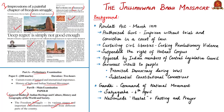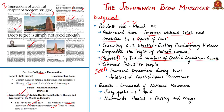Let us know about the background for this massacre. The government of India passed the Rowlatt Act in March 1919. The act authorized the British Indian government to imprison any person without trial and conviction in a court of law, and it aimed at severely curtailing the civil liberties of Indians in the name of curbing revolutionary violence. The act would also enable the government to suspend the right of habeas corpus, which had been the foundation of civil liberties in Britain.